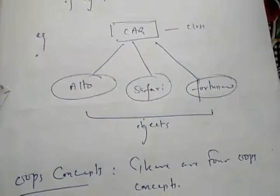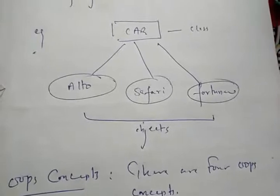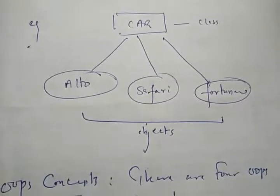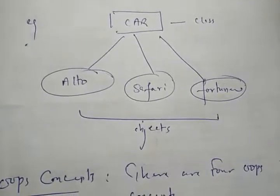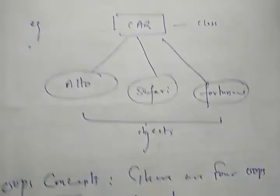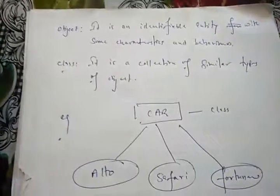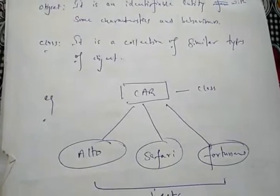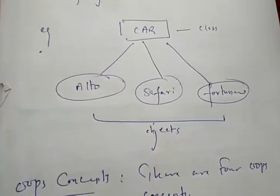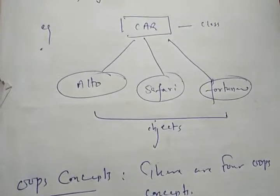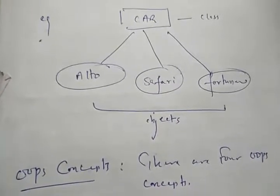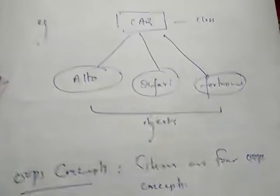The next topic is class and object. In this diagram, car is a class, and Auto, Safari, and Fortuner are the objects. A class contains similar types of properties. An object is an identifiable entity with some characteristics and behavior. Auto, Safari, and Fortuner are objects of the car class because all of them share similar properties such as 4 wheels, one steering, an engine, etc.